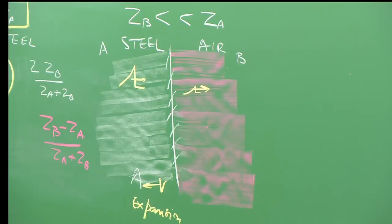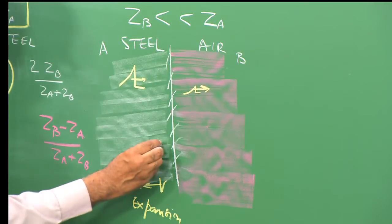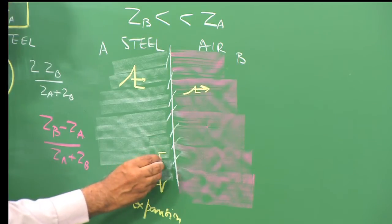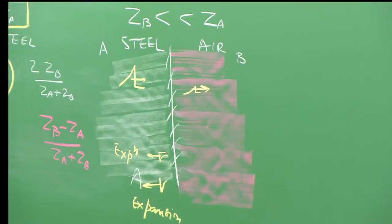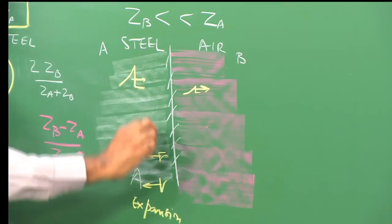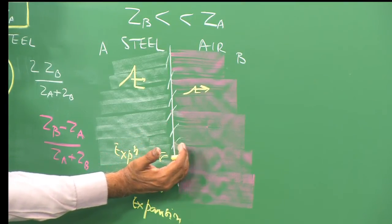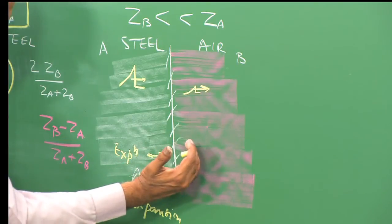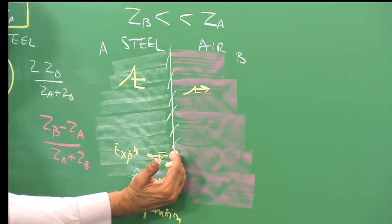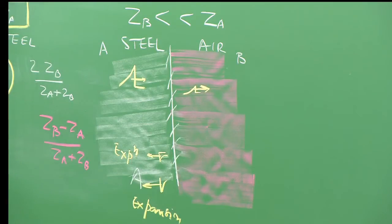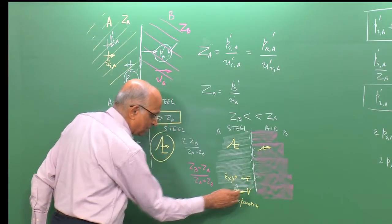I will repeat this because it is important: you have a compression wave moving toward the interface, and what gets reflected is not a compression but an expansion — there is a drop in pressure. Why? Because the surface relaxes when it meets the much rarer medium. When the surface relaxes, an expansion process takes place and what reflects back is an expansion wave.